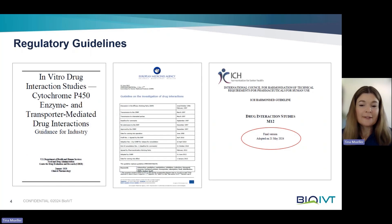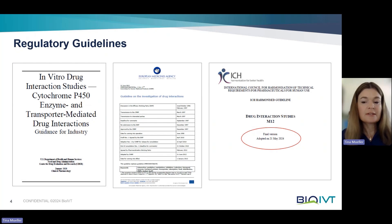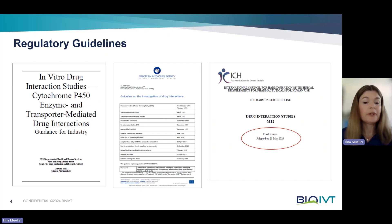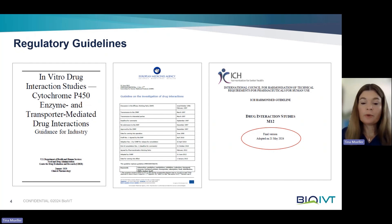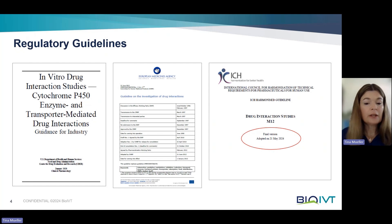Speaking of regulatory guidelines, here are three examples. On the left, there is the in-vitro drug interaction studies guidance — cytochrome P450 enzyme and transporter mediated drug interactions — the guidance for industry by the FDA, finalized in 2020. To give a quick excerpt: it says evaluating the DDI potential of an investigational new drug involves, one, identifying the principal routes of the drug's elimination; two, estimating the contribution of enzymes and transporters to the drug's disposition; and three, characterizing the effect of the drug on enzymes and transporters.